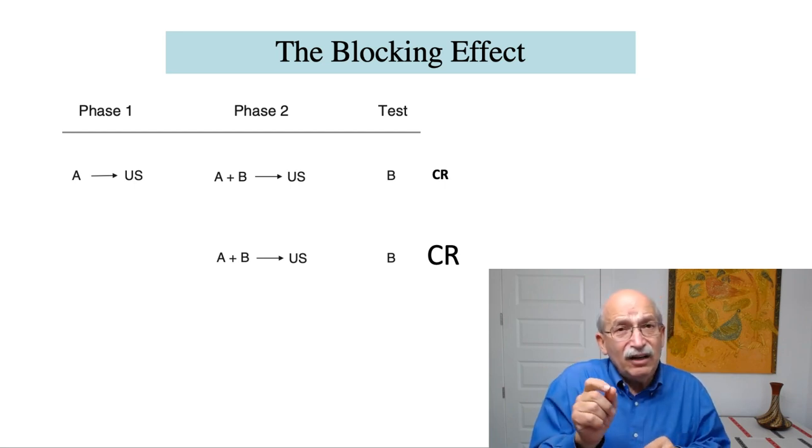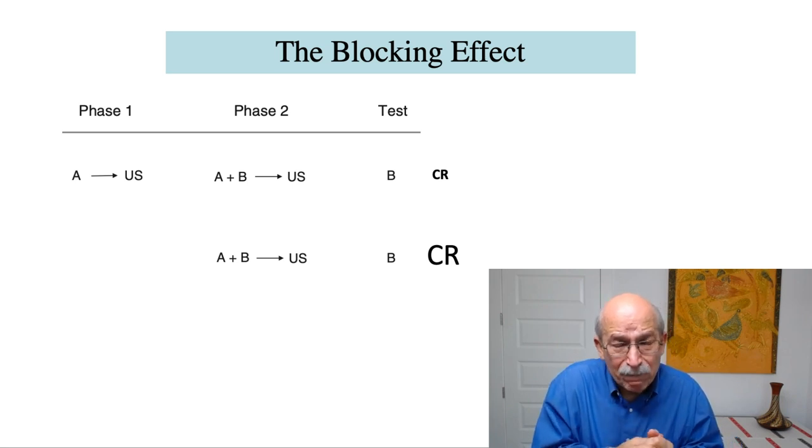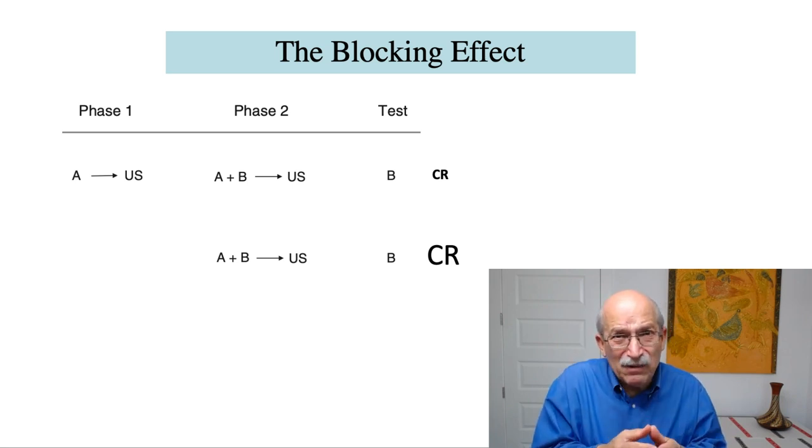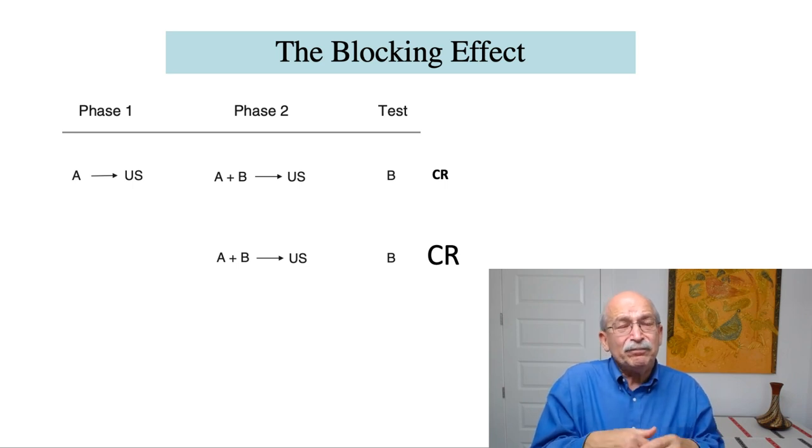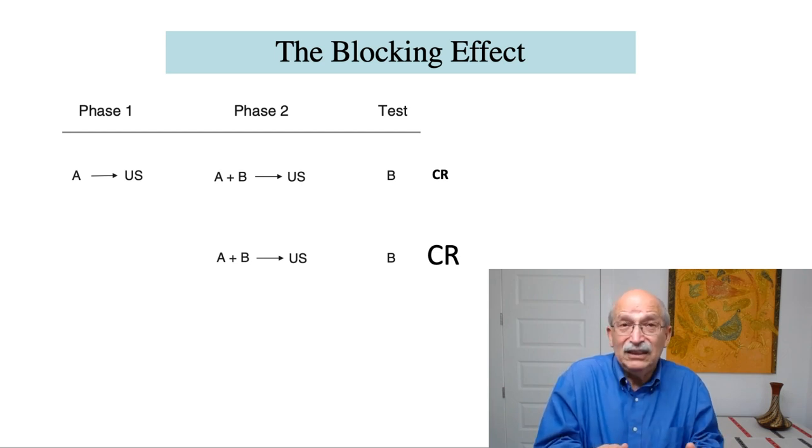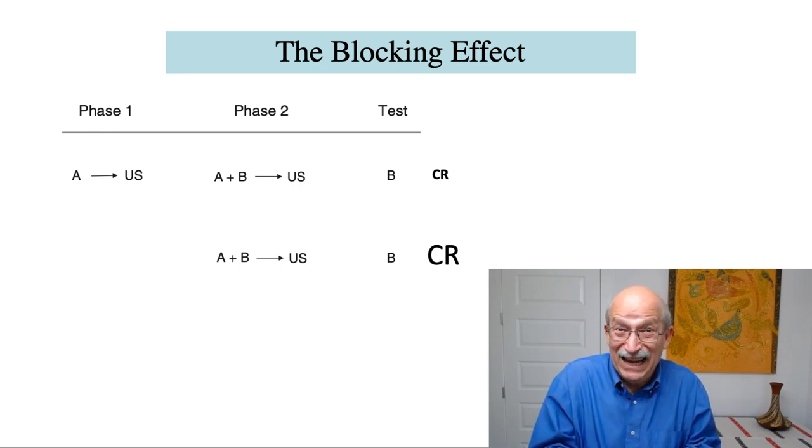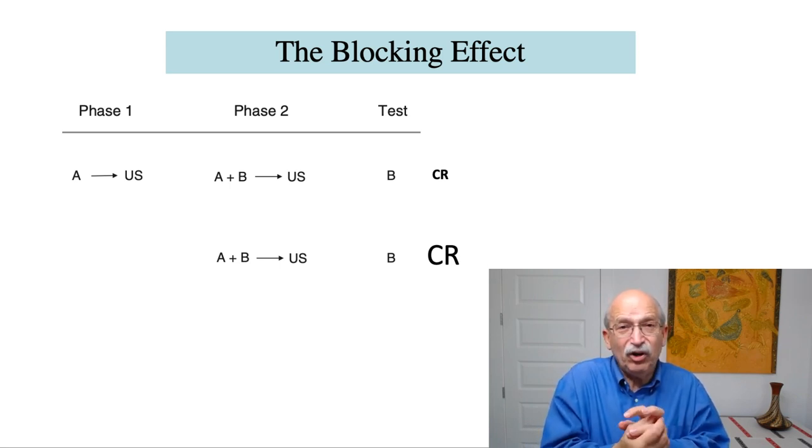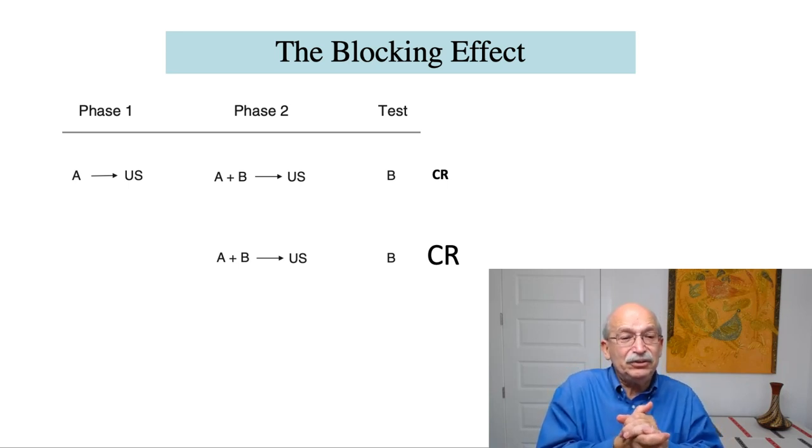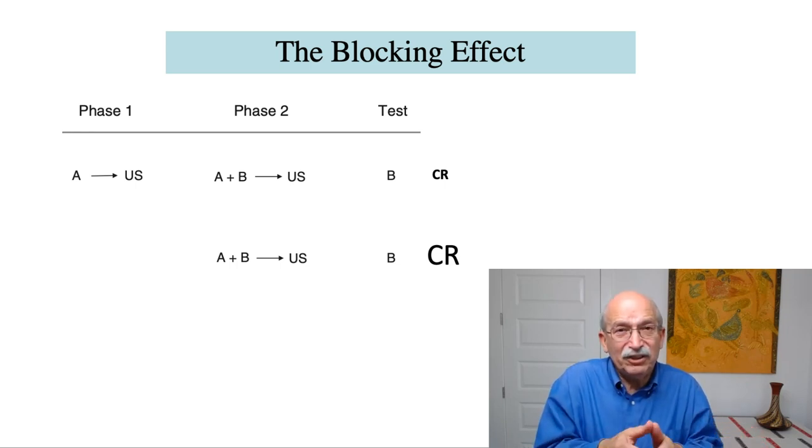And we do a number of conditioning trials of the sort. And the question is, what is the subject going to learn about stimulus B? So the Rescorla-Wagner model invites us to consider what kind of error is to be corrected. Because according to the Rescorla-Wagner model, learning is driven by, is motivated by error correction. It's only if you're making a mistake in predicting the U.S. that you are making an error. And it's only under those circumstances that there's motivation to produce more learning.